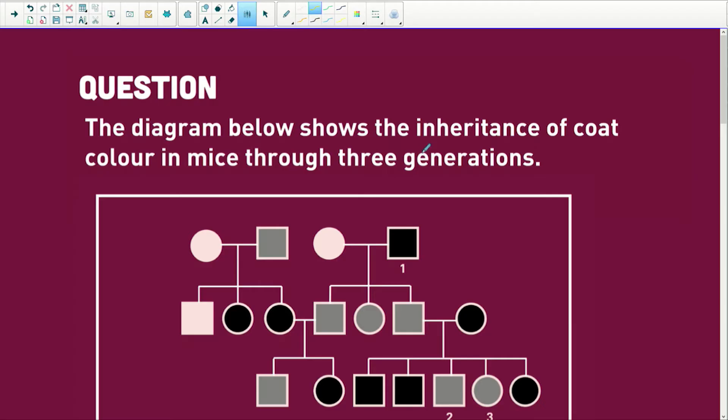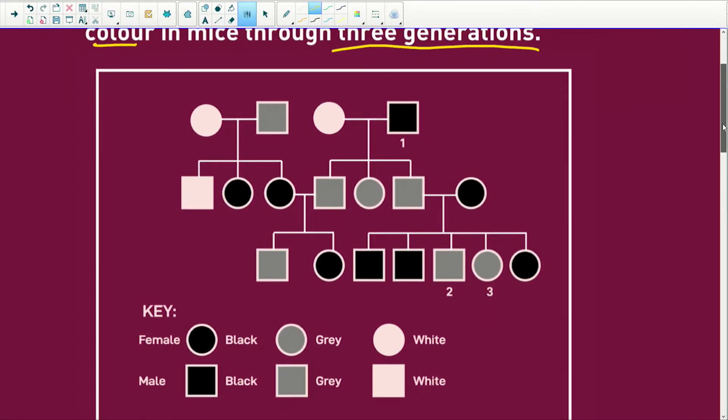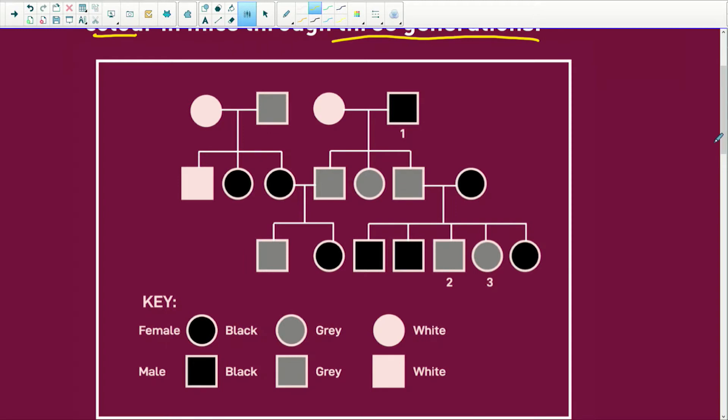The diagram below shows the inheritance of coat colour in little mice for three generations. All right, so let's look at our little pedigree diagram. Oh wow, look here. We've got all our little mice. Here we've got little mice one and two and three.